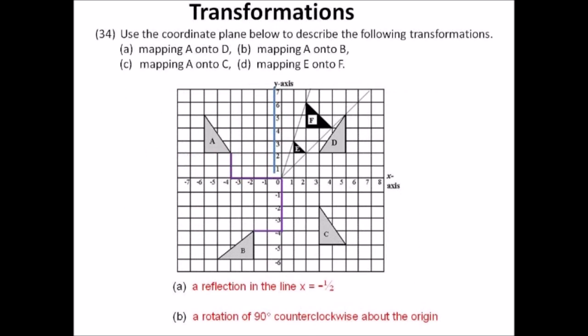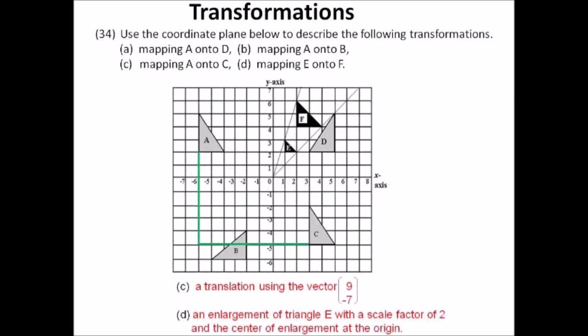Number thirty-three: circle theorems. x equals 2 times 46 equals 92 degrees — the angle at the center is double the angle at the circumference. y equals 44 degrees and z equals 46 degrees. Subtract x from 180 and divide by 2 to find y, then subtract from 90 to get z. Number thirty-four: transformations. Mapping A onto D was a reflection in the line x equals negative one-half. Mapping A onto B was a rotation of 90 degrees counterclockwise about the origin. Mapping A onto C was a translation using the vector (9, negative 7). Mapping E onto F was an enlargement with scale factor 2 and center of enlargement at the origin.